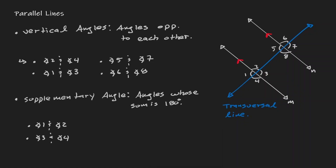There are a lot of supplementary angle pairs. For instance, if I add angle two and angle three, I'm essentially creating another line — so angle two and angle three are also supplementary. We're not going to list all of them, but as you can see, there are a lot being created. Anytime we have two parallel lines and a transversal line, we are essentially creating vertical angles and supplementary angles.